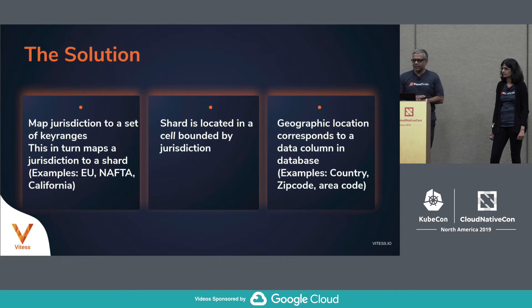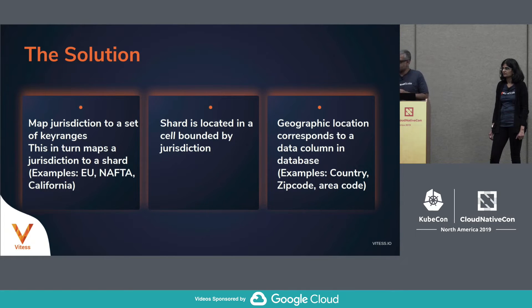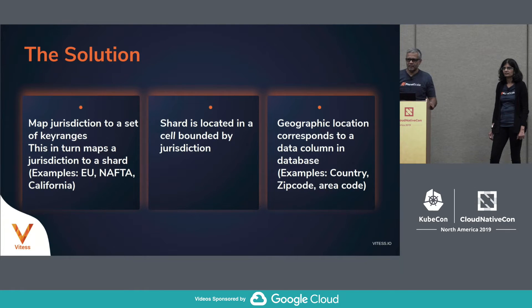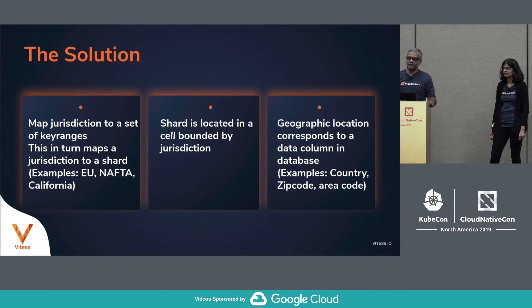Now that we've talked about these concepts — before I start talking about the solution for jurisdictional databases — let me pause and ask if you have any questions. One question: multiple column primary keys. In the Vindex we're going to use, we'll actually use multiple columns. But in Vitesse generally, your sharding column and your primary key don't need to be the same.